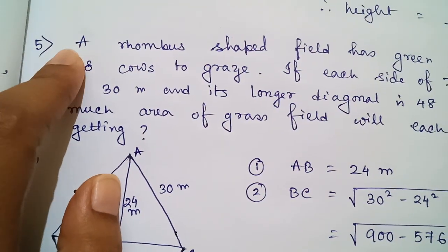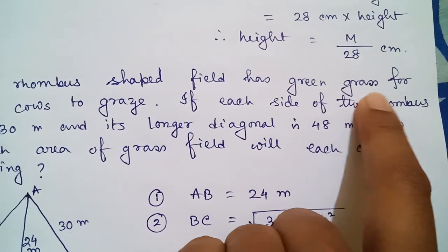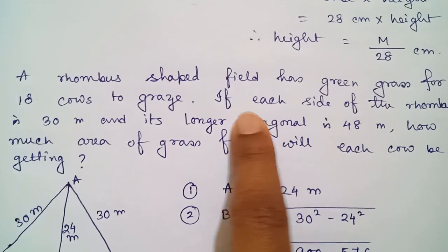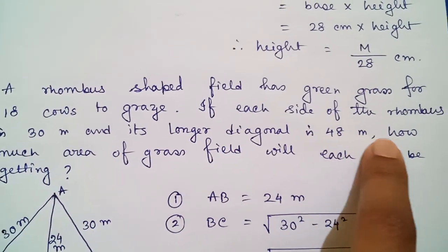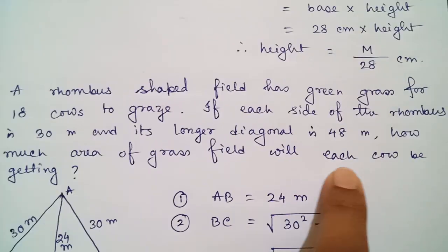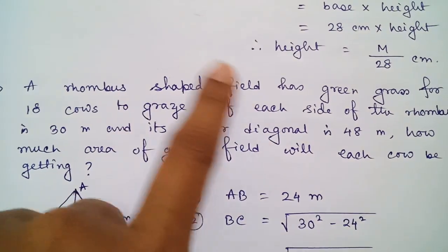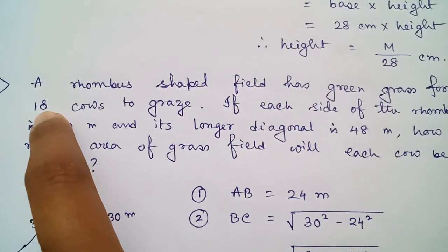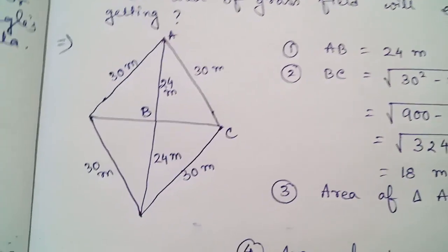Coming to question number five: a rhombus-shaped field has green grass for 18 cows to graze. Each side of the rhombus is 30 meters and its longer diagonal is 48 meters. We need to find the total rhombus area and then divide it by 18 to get how much area each cow will get.